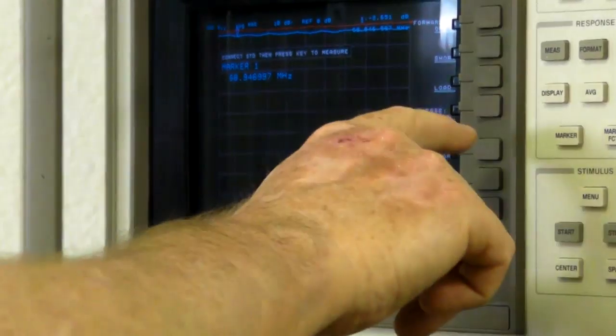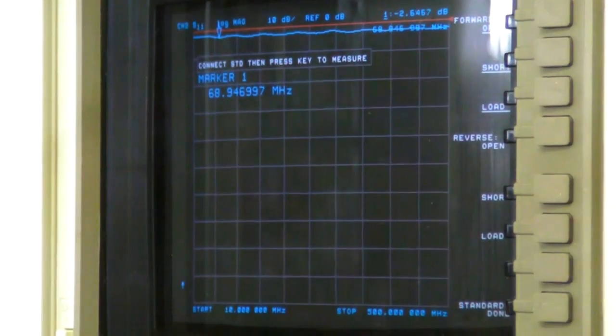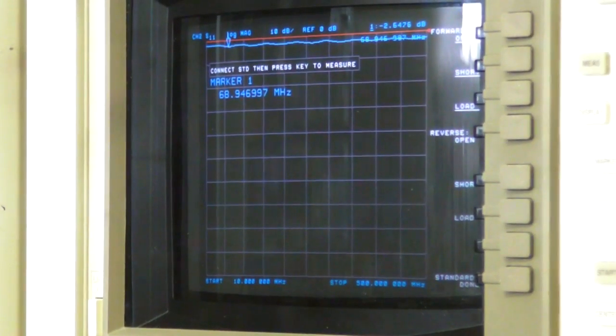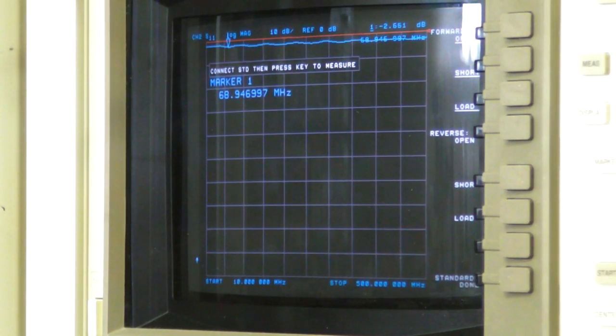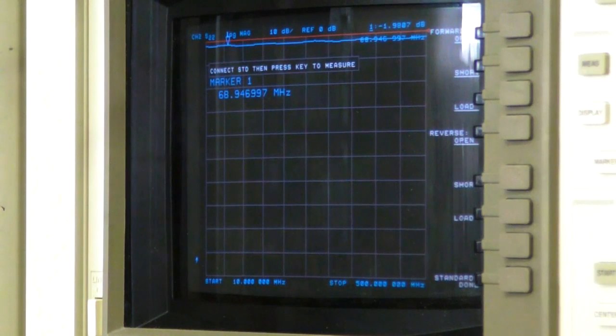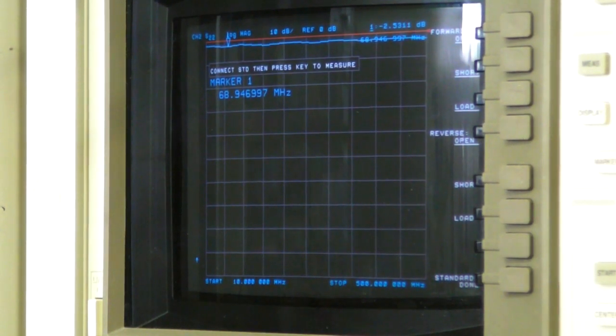Then we'll do the other port here. We'll show port 2, the open first. Anyway, it builds this fancy 12-term model with amplitude and phase at the 201 frequencies that it's observing. Since I'm trying to go as quickly as possible here, we've limited it to 201 points. The instrument has enough memory to do 1,601 points maximum.